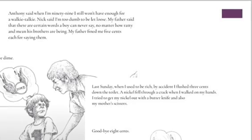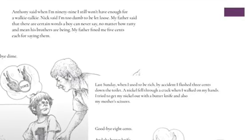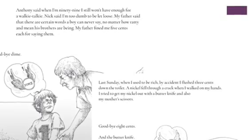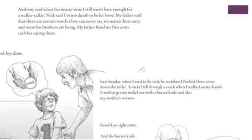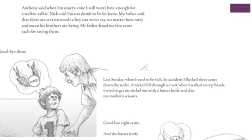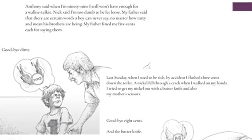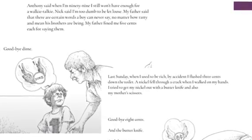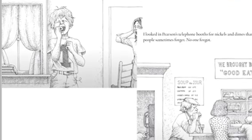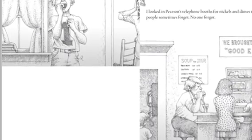Anthony said when I'm 99 I still won't have enough for a walkie-talkie. Nick said I'm too dumb to be let loose. My father said there are certain words a boy can never say, no matter how ratty and mean his brothers are being. My father fined me five cents each for saying them. Goodbye, dime. Last Sunday I used to be rich. By accident, I flushed three cents down the toilet. A nickel fell through a crack when I walked on my hands — I tried to get it out but I couldn't. I tried to make a tooth fall out so I could put it under my pillow and get a quarter — no loose tooth. I looked in Pearson's telephone booth for nickels and dimes that people sometimes forget — no one forgot.